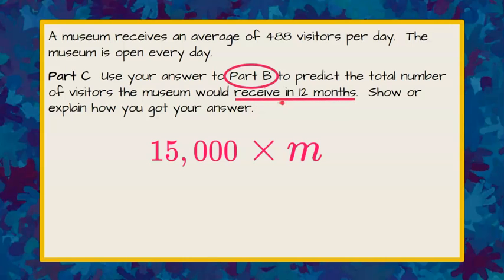Back to part C. We want to predict the total number of visitors in 12 months. That 12 months represents this m. So we're going to put the 12 in place of the m. They're specifically telling us that the number of months m is 12. So we want to do 15,000 times 12.